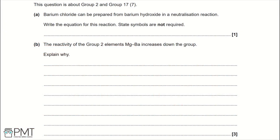This question is about Group 2 and Group 17. Part A: barium chloride can be prepared from barium hydroxide in a neutralization reaction. Write an equation for this reaction. State symbols are not required when writing any equation.